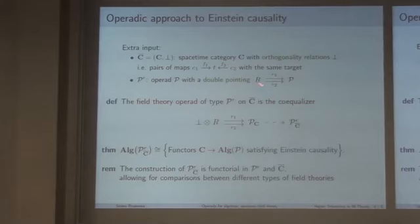So, we take an operad with a double pointing, two operations that we want to be the same for spacelike separated algebras. And then, we define field theory operad of type P with these relations on our orthogonal category as a coequalizer of this diagram. What it means is that we quotient out the exact relations that we want. And we know that this is the right object to define because algebras over this operad are exactly functors from C to the algebras over P satisfying Einstein causality in a more general sense.